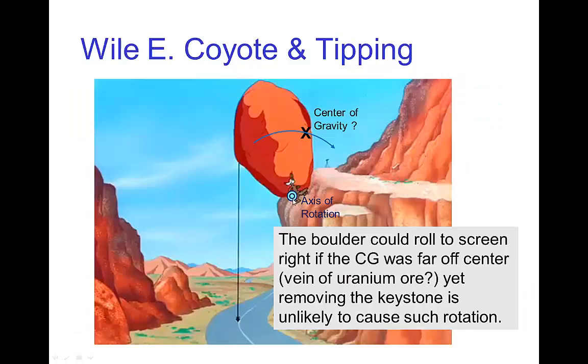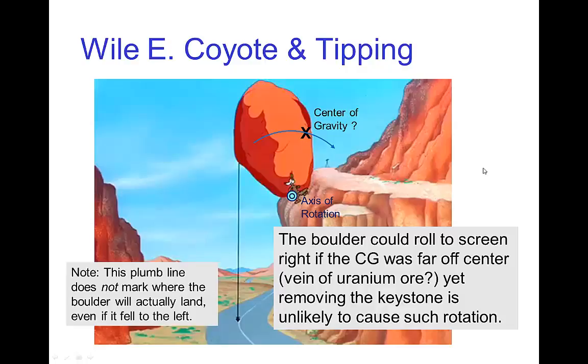What happens is the rock surprisingly tips over towards screen right. Now, could that happen? Well, perhaps if the center of gravity was actually located on the far side of the rock for some unusual reason, like there was a vein of uranium in that rock. But of course, it's funny because it's surprising and it's not what you expect.